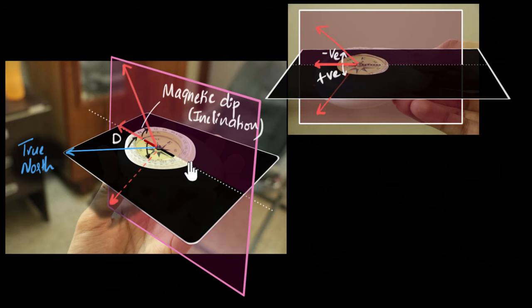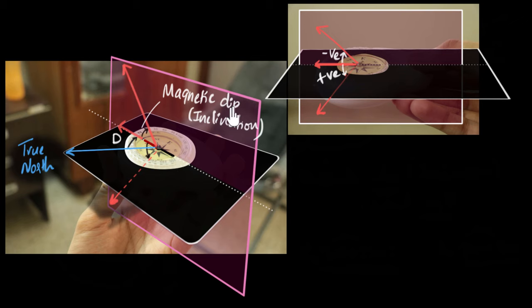If you ever get confused, just remember: dip is a very descriptive word — it literally tells you how much the magnetic field is dipping with respect to the horizontal. So I remember that, and then I remember that declination is the other angle, the horizontal angle.